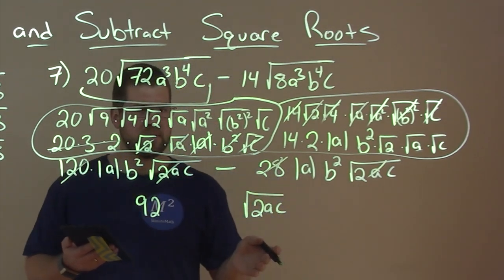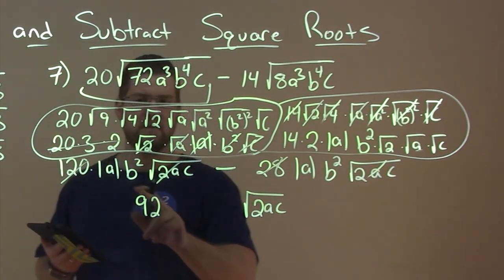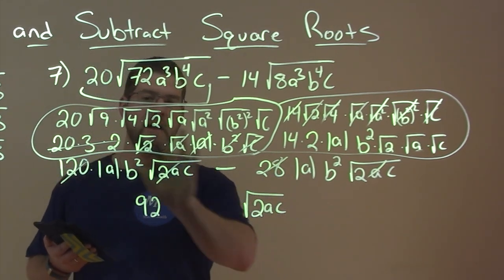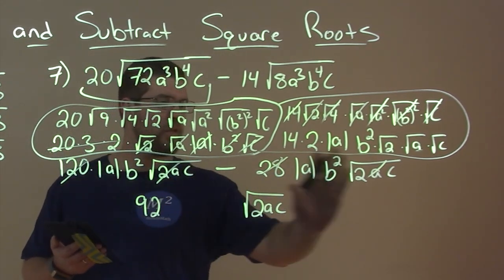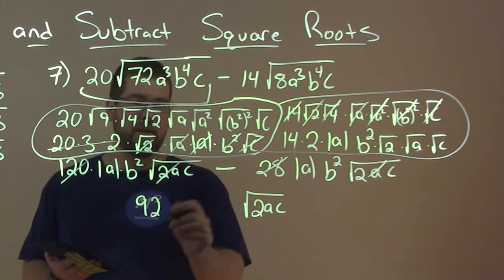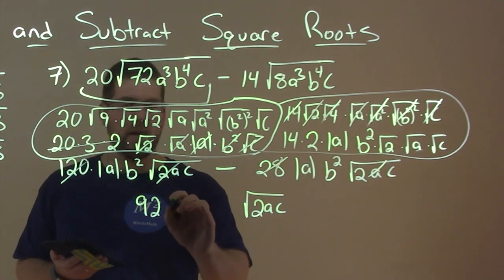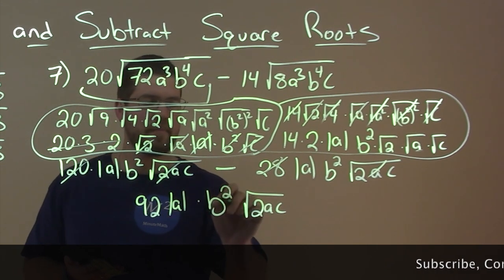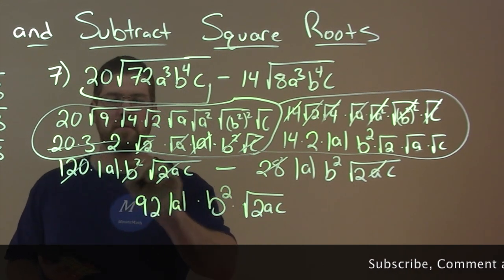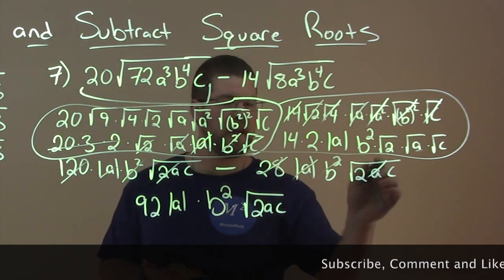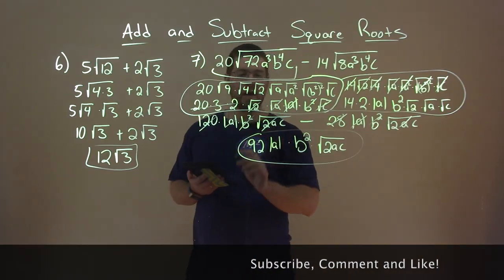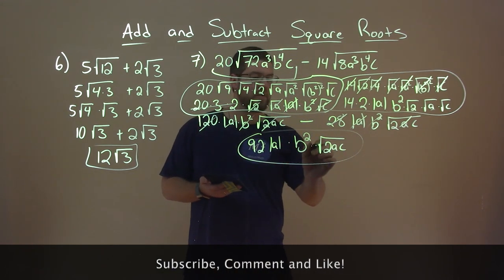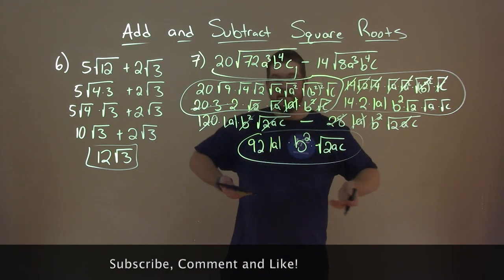Well really those are just variables. Aren't they the same? We have a variable here. It was really actually 120 minus 28, that's like the coefficient. And this whole thing is basically like a variable. So actually we just bring everything down, we kind of combine it. So we have absolute value of a times b squared times the square root, we combine it all together of 2ac. And there's our answer: 92 absolute value of a times b squared times the square root of 2ac. And there we go.